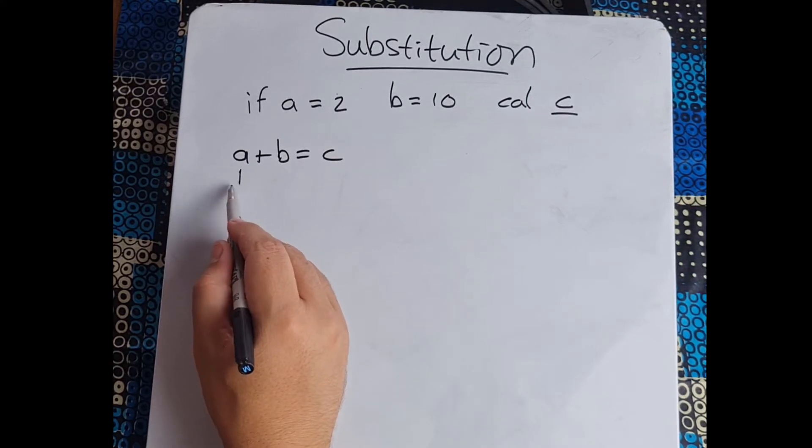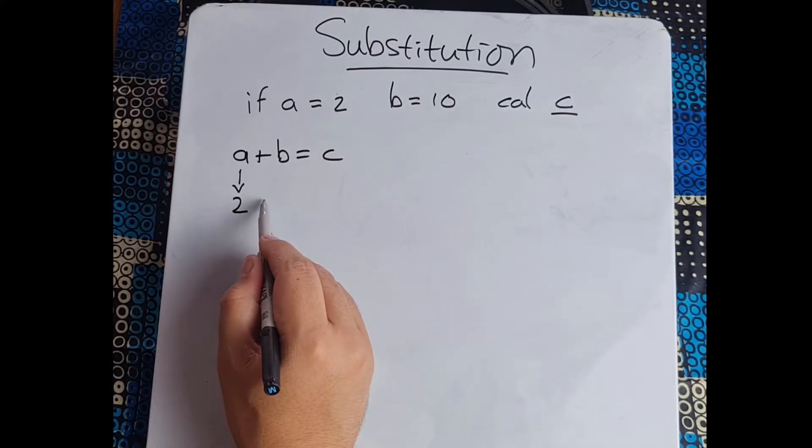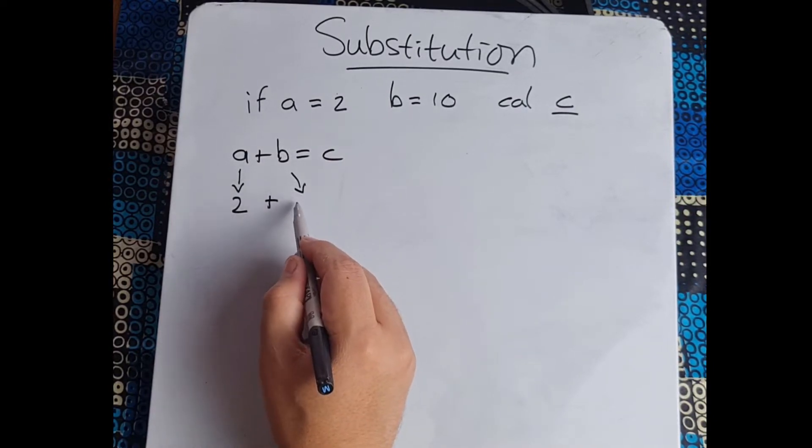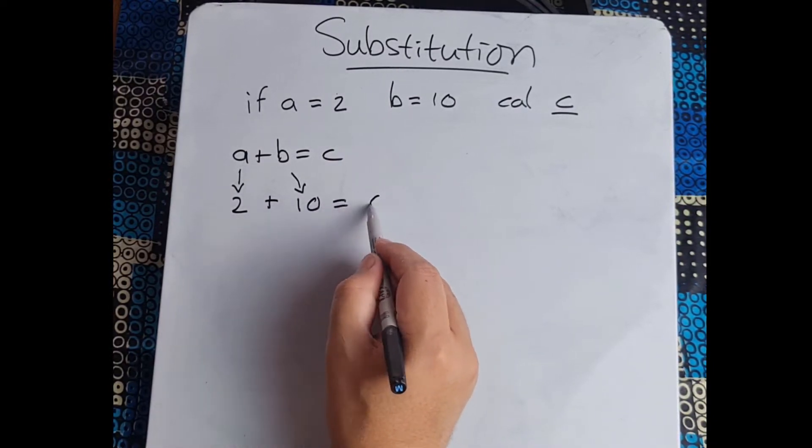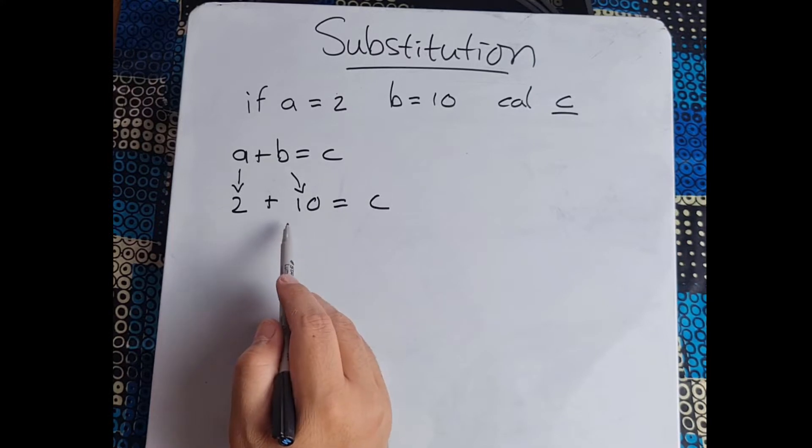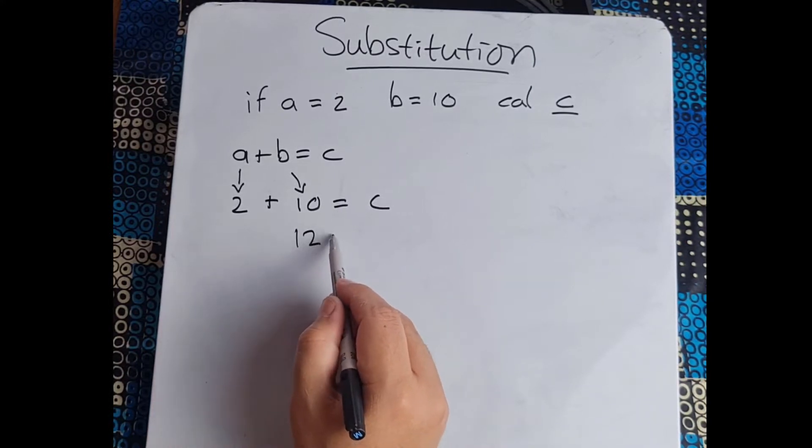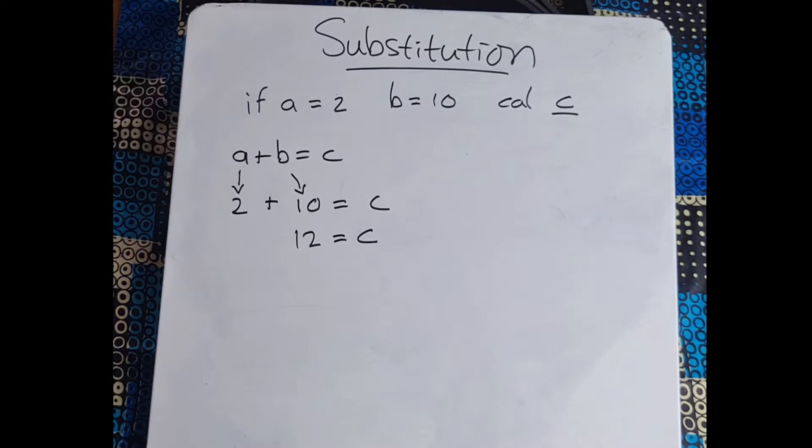Because we know what a is, it's going to be 2 plus we know what b is, 10. We don't know what c is, but because we know these other values we now know that c equals 12.